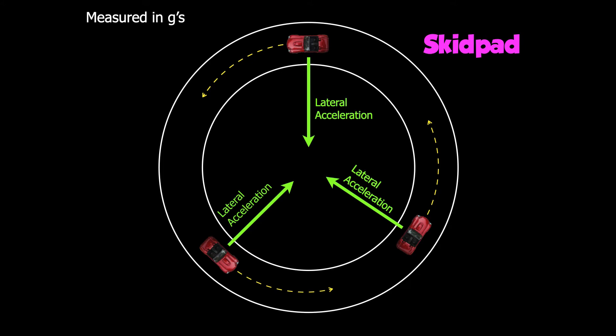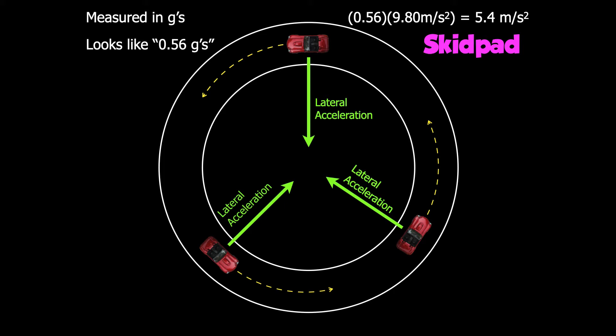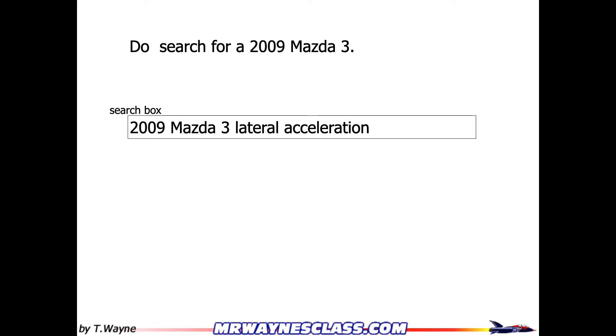Lateral acceleration is measured in g's, where 1g equals 9.8 meters per second squared. A car's value is typically given as something like 0.56g. In math terms, that means 0.56 times 9.8, which equals 5.4 meters per second squared.